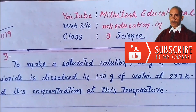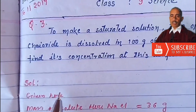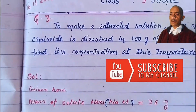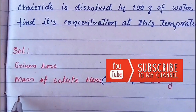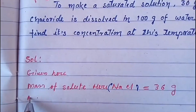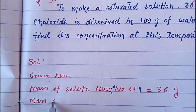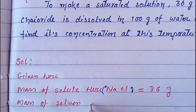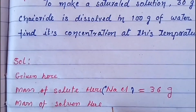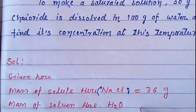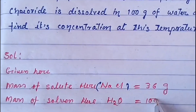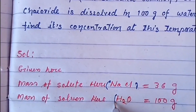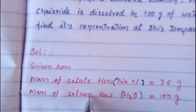Mass of solute and water is solvent. We have just noted it down. Given that mass of solute is 36 gram. The mass of solvent — H2O — is equal to 100 gram. This is the solute and this is the solvent.